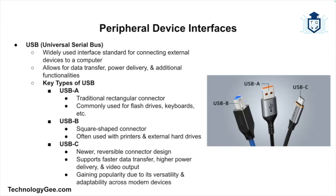Peripheral device interfaces connect external devices to computers, allowing data transfer and additional functionality. USB, or Universal Serial Bus, is a standard for connecting a wide variety of peripherals. USB-A is the most recognizable rectangular connector, widely used for flash drives, keyboards, and mice. USB-B is often found on printers and external hard drives and has a more square shape. USB-C is a newer, reversible standard that supports faster data transfer speeds, higher power delivery, and can also be used for video output, quickly becoming the go-to connector for modern devices.